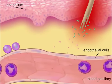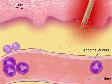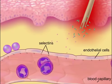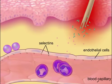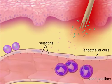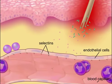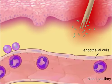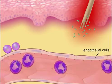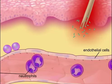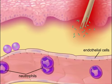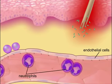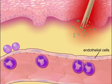Within the capillaries, adhesion molecules called selectins are displayed on the activated endothelial cells. These adhesion molecules attract neutrophils, slow them down, and cause the neutrophils to roll along the endothelium.